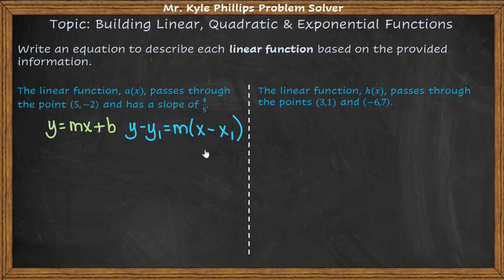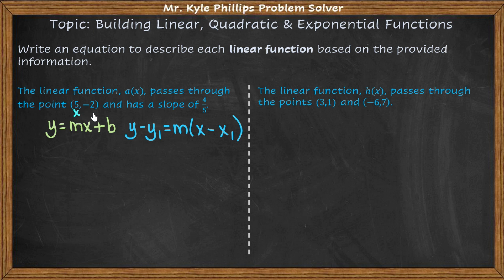If you have not seen this before, write this down. This is called the point-slope form of a line. This is probably one of your more famous ways to write a linear function, and if you pursue higher-level math when talking about tangents and derivatives, this is all you will see — you won't really see y equals mx plus b. The form is y minus y1 equals m times x minus x1. M is the slope, and what's convenient is you have a place to plug in your y1 and x1 values. So we're going to plug in our x and our y.